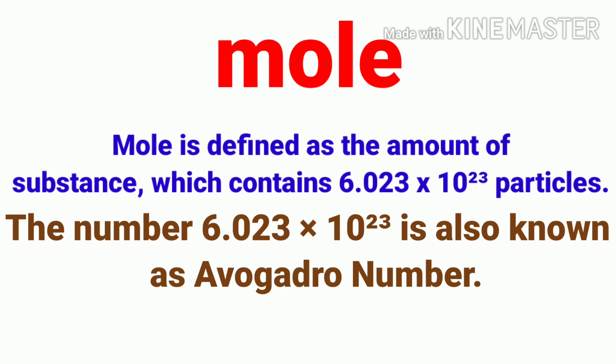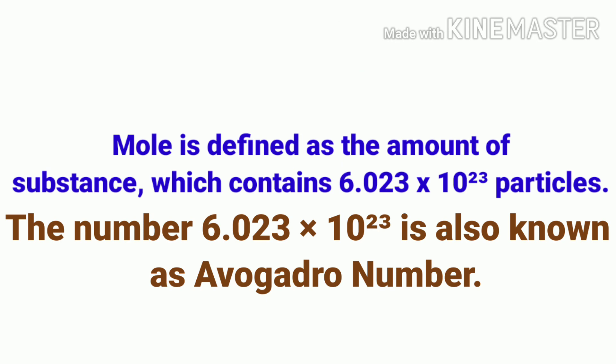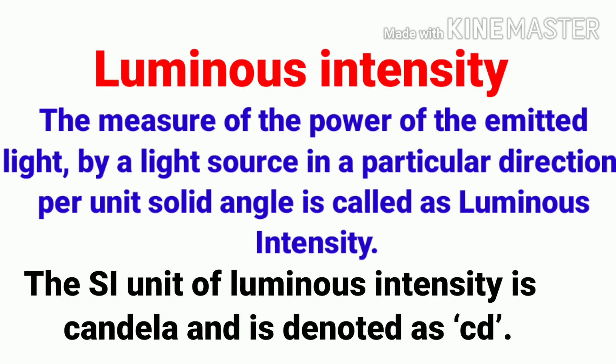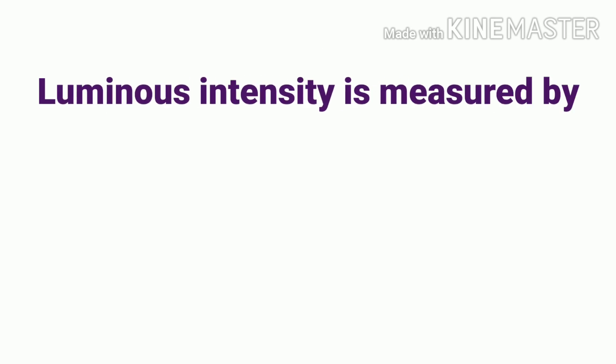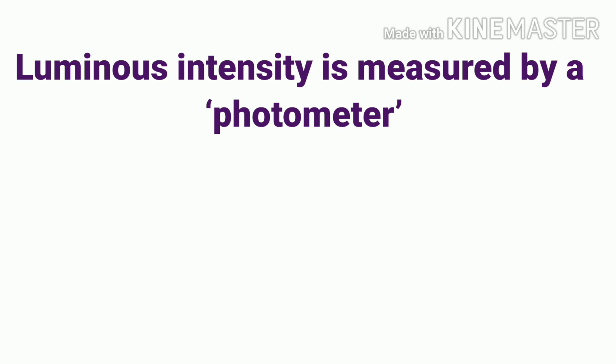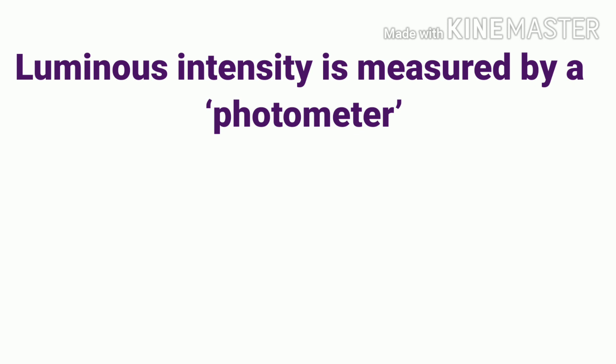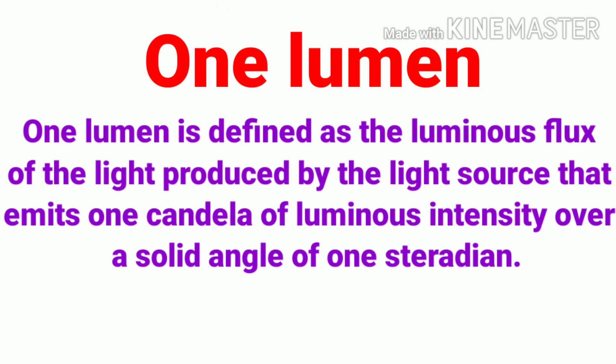Next, the topic of luminous intensity. Luminous intensity is the measure of the power of light emitted by a light source in a particular direction per unit solid angle. Its unit is the candela, symbol cd, and the measuring instrument is the photometer. Luminous flux or luminous power is the measure of the perceived power of light; its unit is the lumen. One lumen is defined as the luminous flux produced by a light source that emits one candela of luminous intensity over a solid angle of one steradian.